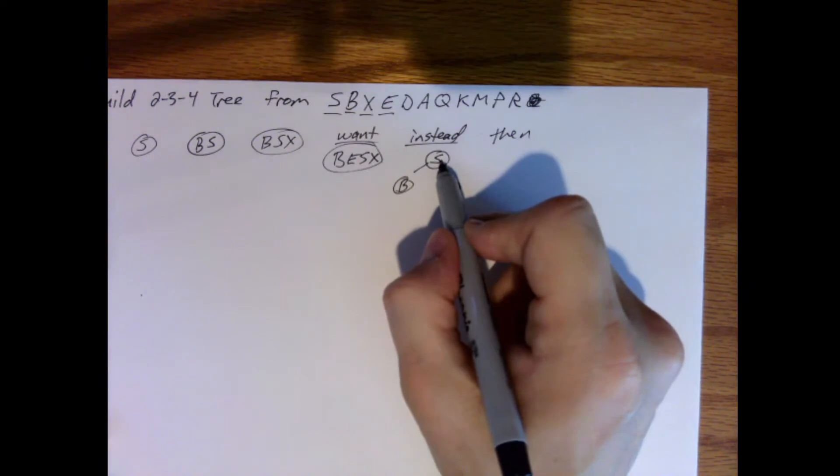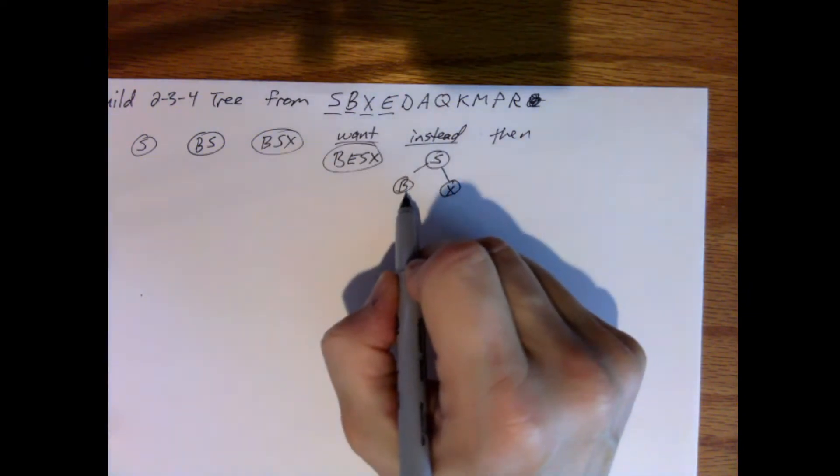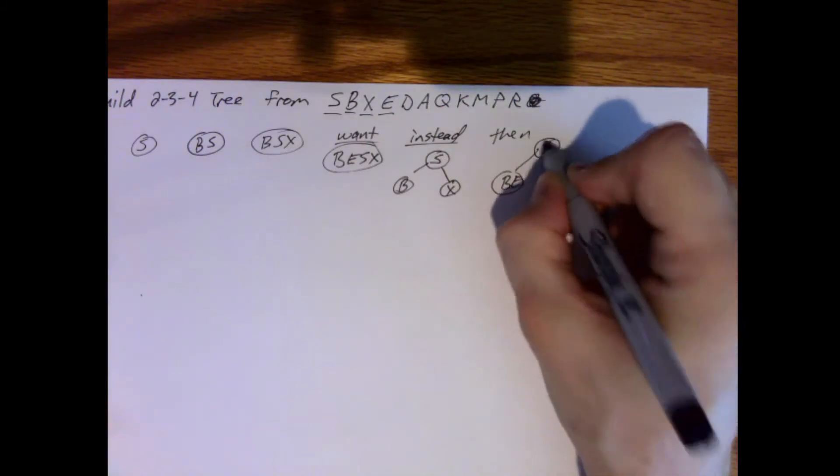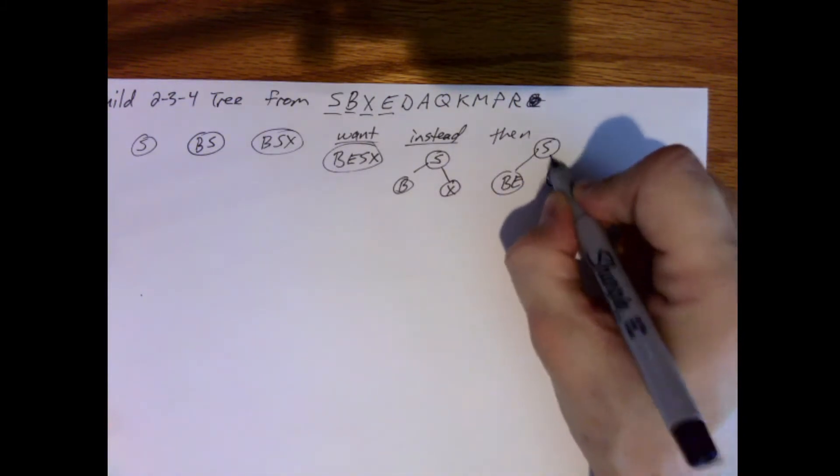And then we'll add the E. So come to here, E is less than S, come down to here, add it to this node. So B, E, then S and X.